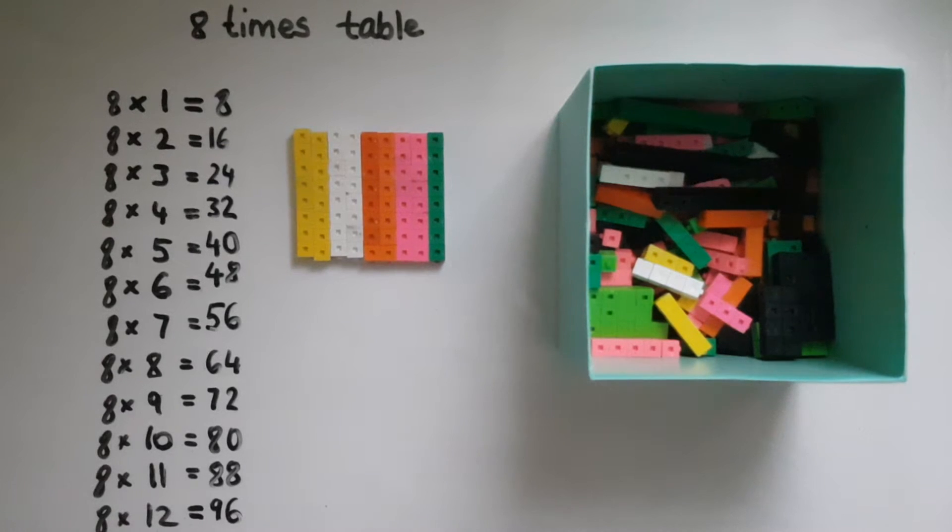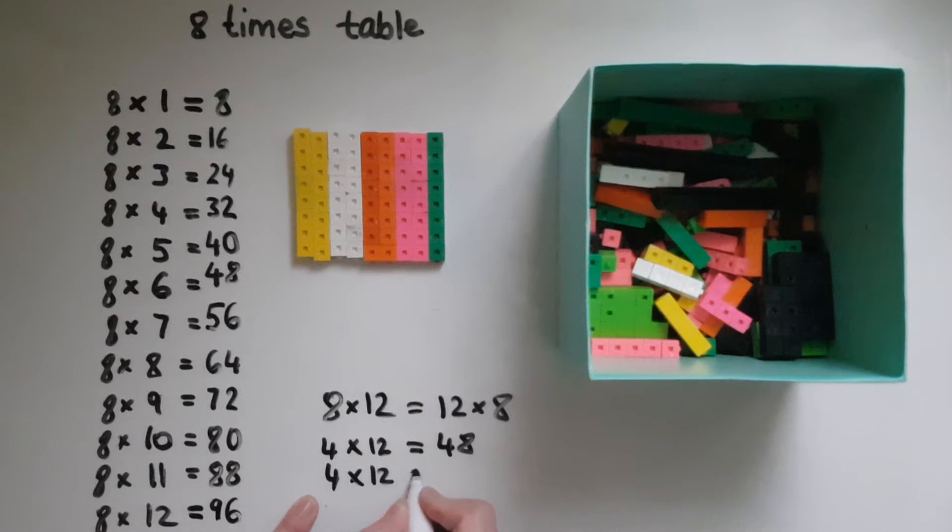But you could also break down the 8 instead. Because we know that 8 times 12 is the same as 12 times 8. So if I break down the 8 into 4 and 4. So 4 times 12 is 48. 4 times 10 is 40. 4 times 2 is 8. So that makes 48, and another 48. That gives us 96 in total.